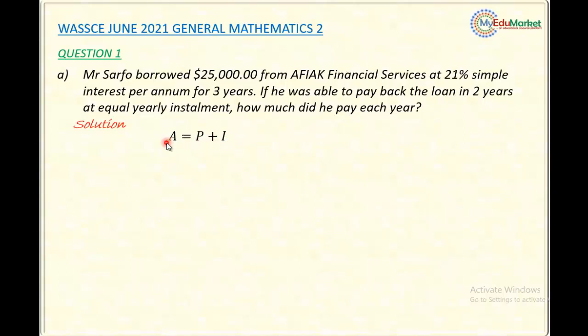This formula, if I expand it more, I will now have P plus P times R times T all over 100. This simply is the interest. Interest, remember, is PRT all over 100.